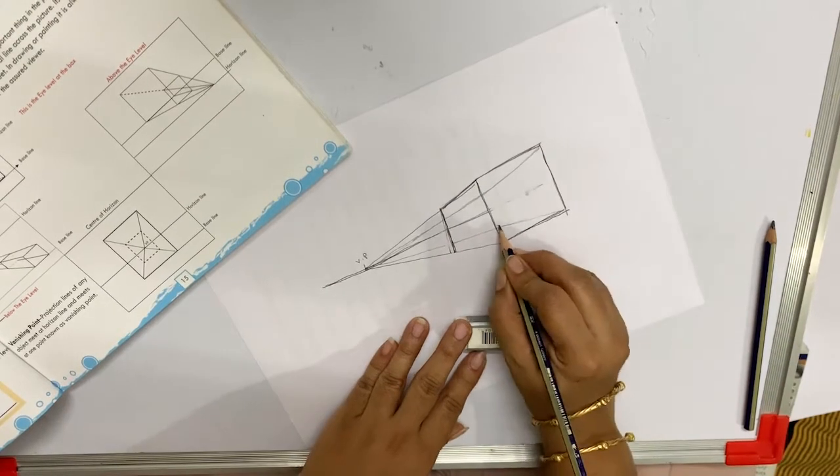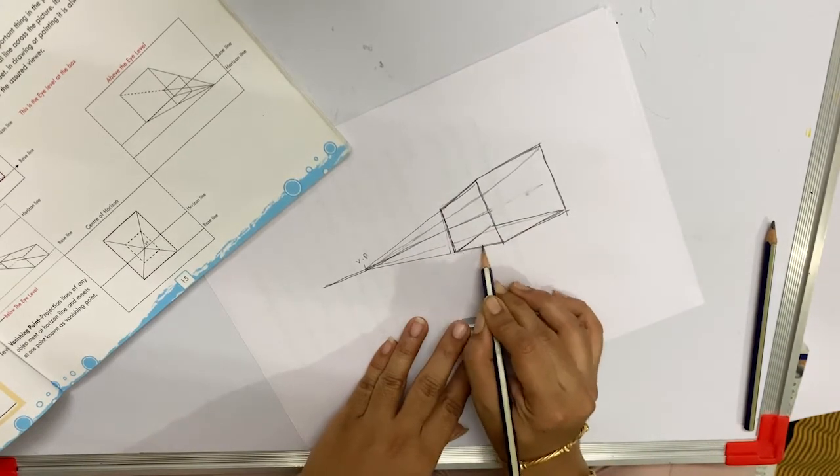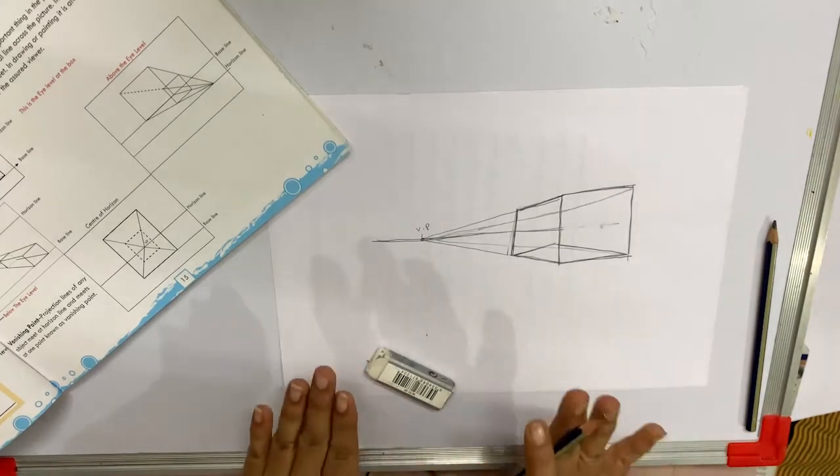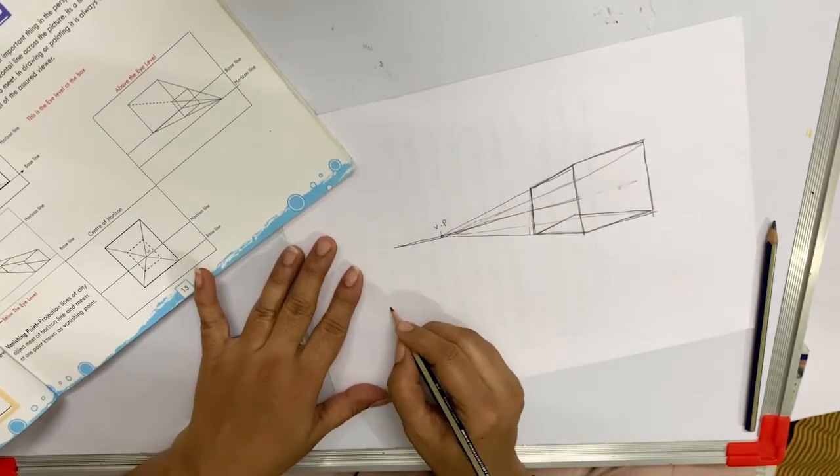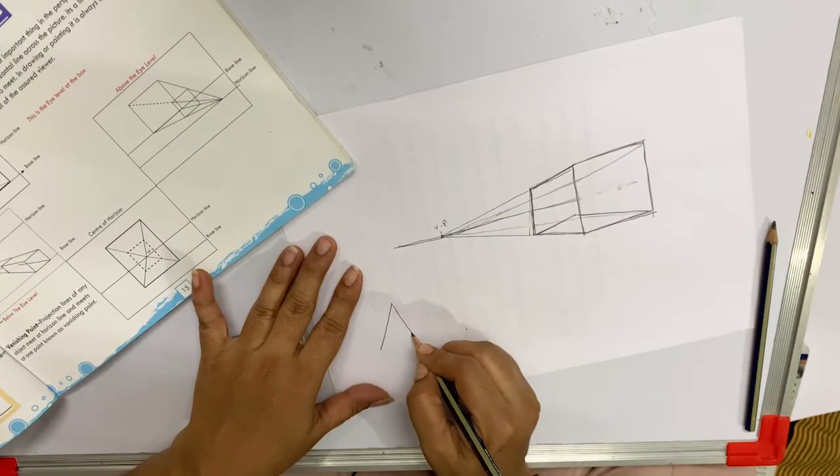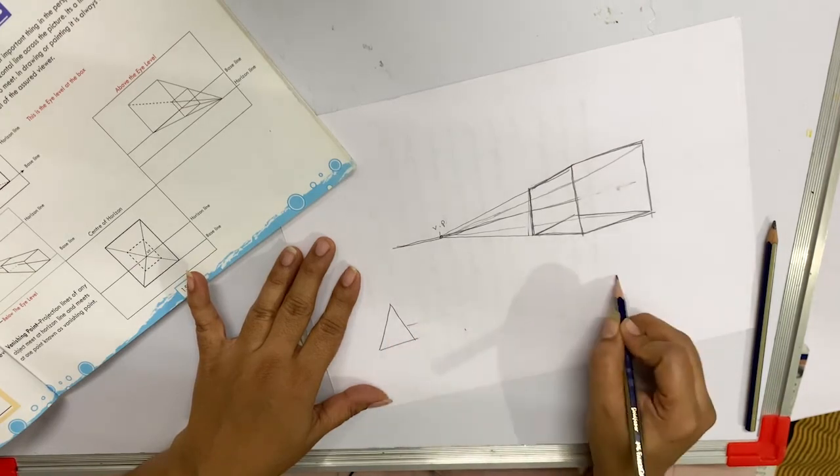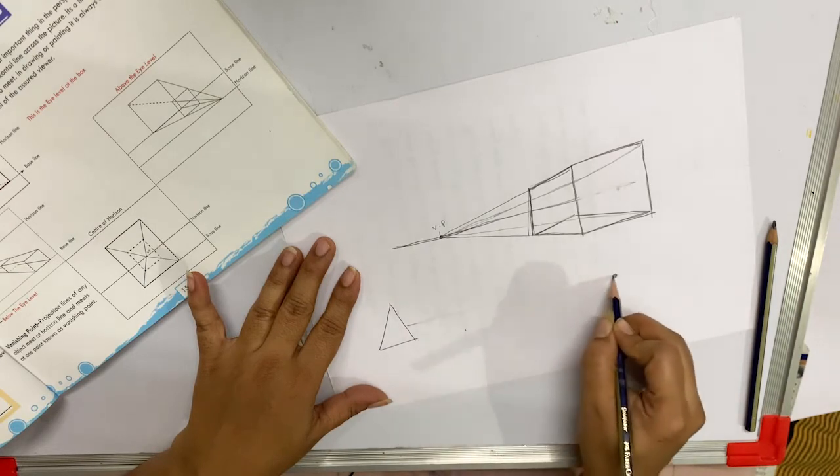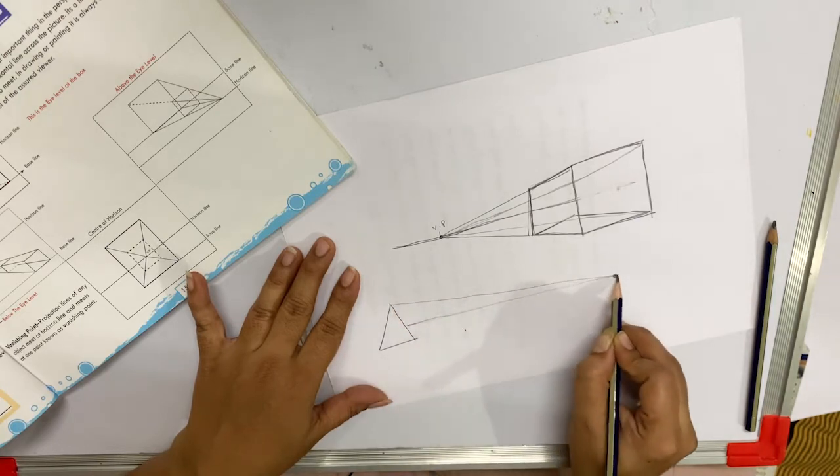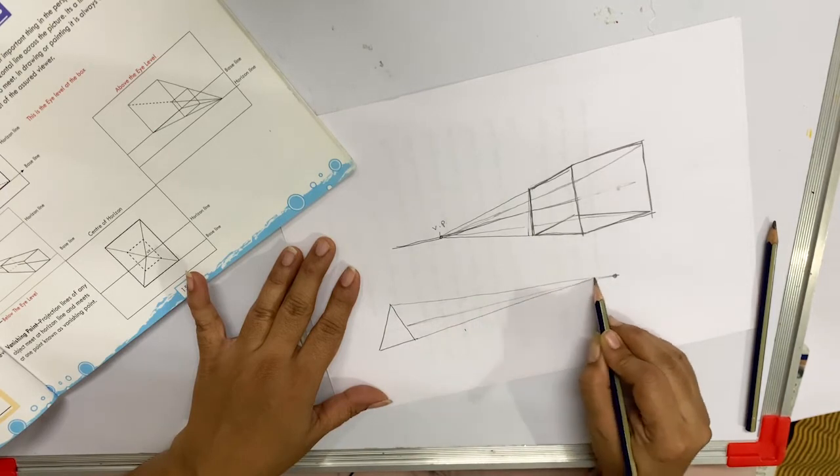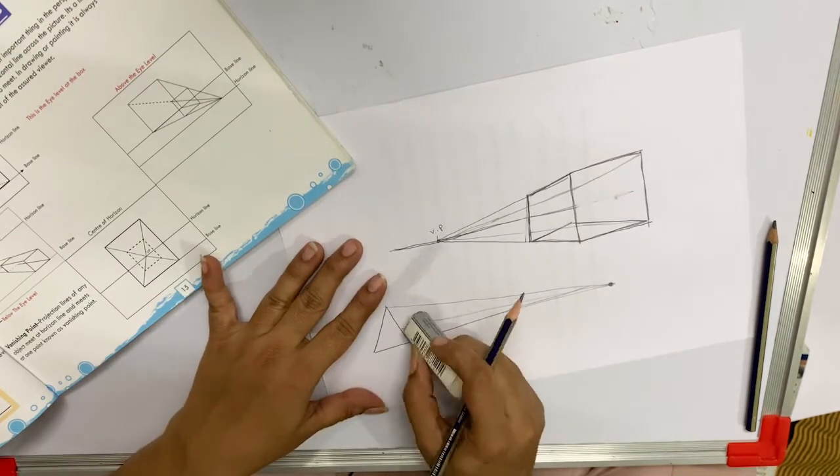You can draw any shape by using this technique. I'm drawing a triangle over here. Now here we have our vanishing point and this is our horizon line. Now this corner is touching to the vanishing point like this.